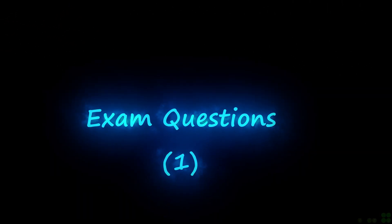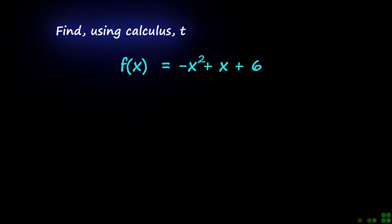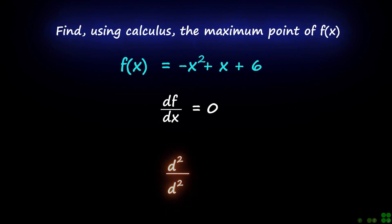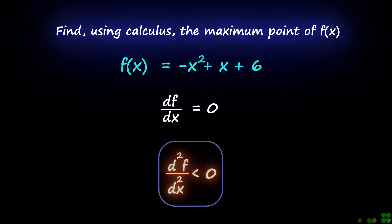Now let's consider some exam questions. A quadratic function is given; find the maximum point of the function. Using calculus, we can set the first derivative equal to zero in order to find the coordinates of the vertex of the parabola. And the negative second derivative will ensure that the vertex is the maximum point.